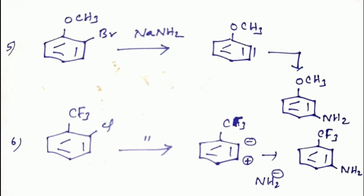Sixth example: the substituent is an electron withdrawing group. Therefore, the first step is elimination of HCl to give benzyne. Then the nucleophile attacks at the meta position. We get the meta product — only one product here.